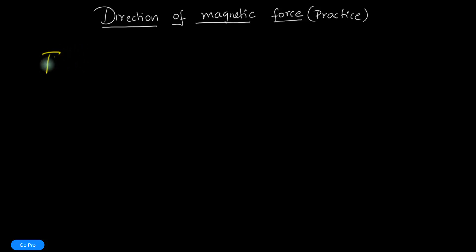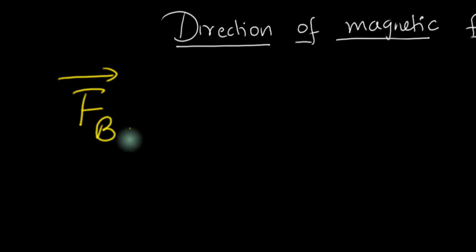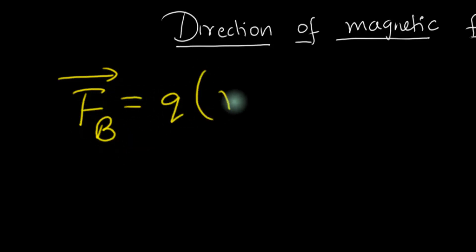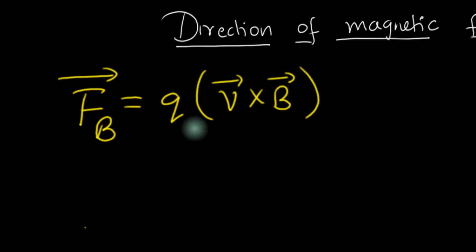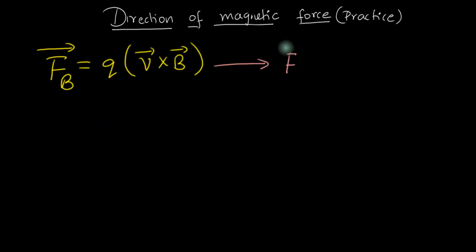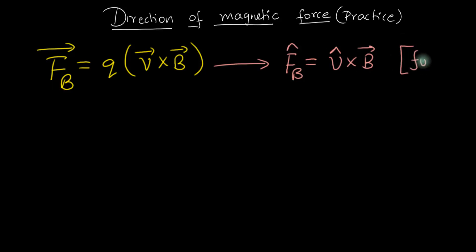We've seen before that the magnetic force on any charge, F_B, is given by the Lorentz equation: q times v cross B. This tells us that the direction of the magnetic force is the same as the direction of v cross B, provided we're dealing with positive charges.